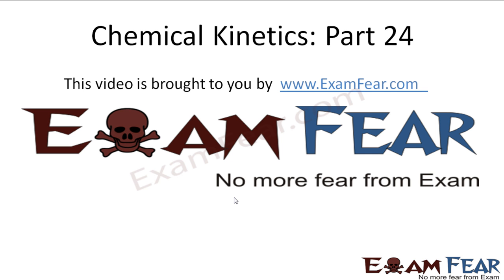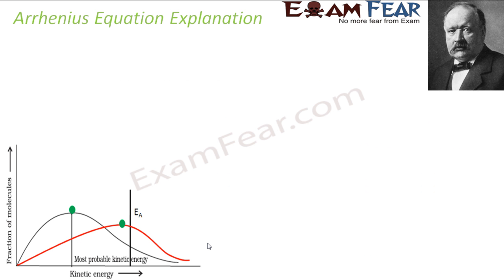Hello friends, this video on chemical kinetics part 24 is brought to you by examfia.com — no more fear from exam. Let's see once again the explanation given by Arrhenius: he explained that K equals A to the power minus Ea by RT. That is the equation he gave.